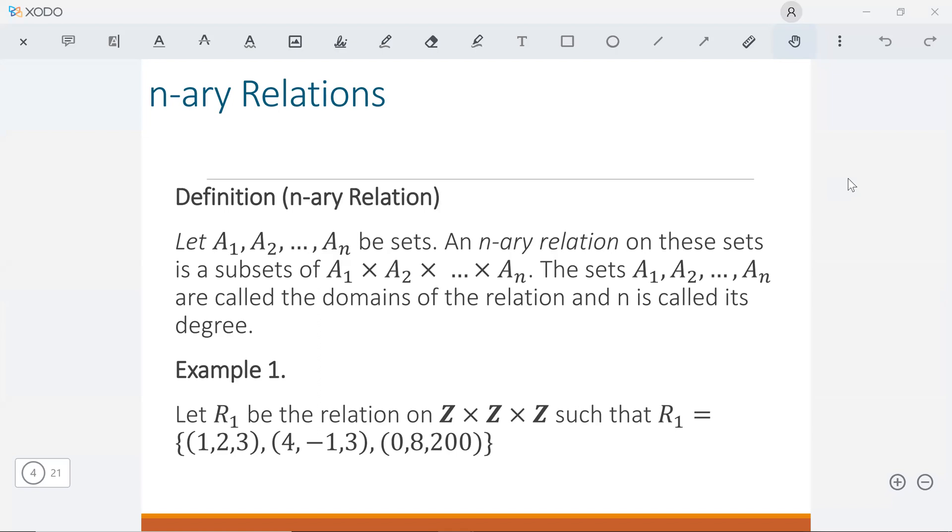For n-ary relation, as the name suggests, this is a relation defined on several sets. In general, if we say n-ary relation, it means we should have an n-ary relation defined here. You can see I denote this from A₁ until Aₙ. And then, same with our definition for relation, n-ary relation is also a subset of the product of the domains of the sets.